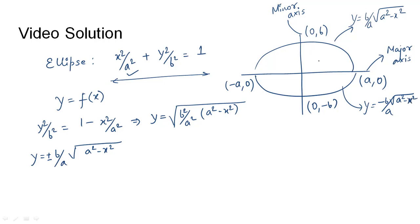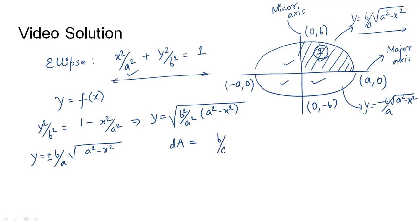All four parts of the ellipse are symmetric, so if we find the area of any one quadrant and multiply by four, we get the area of the whole ellipse. Taking the area for the first quadrant (positive x-y axis): dA = f(x)·dx = b/a · √(a² − x²) · dx, integrated from x = 0 to x = a.